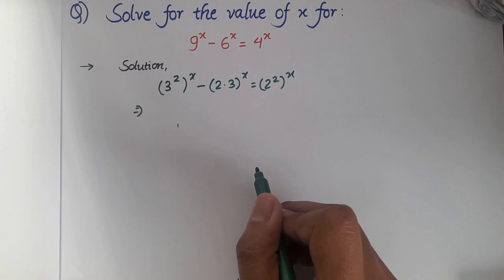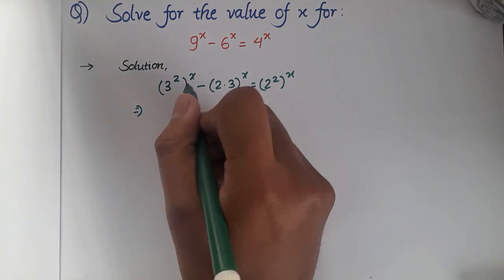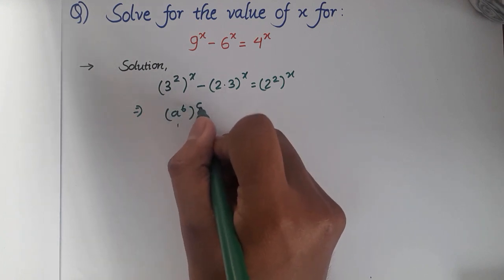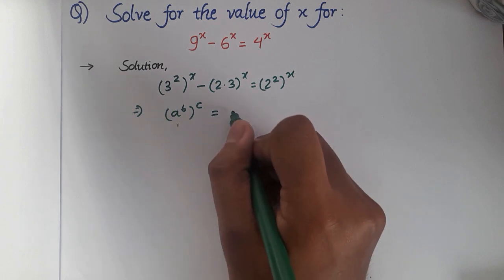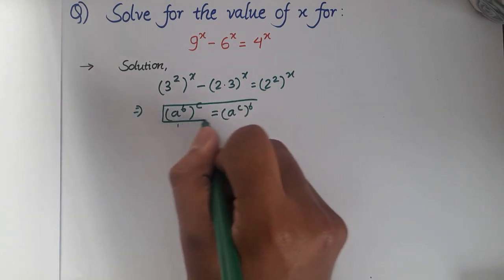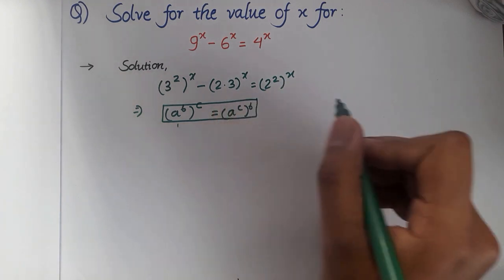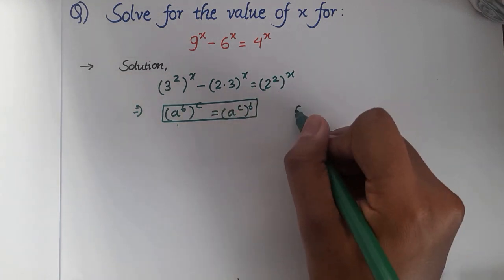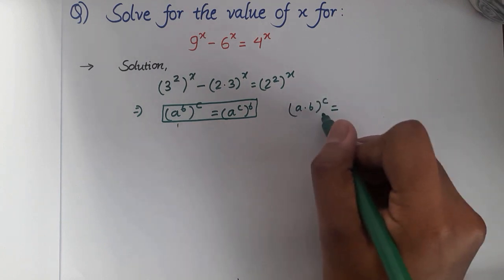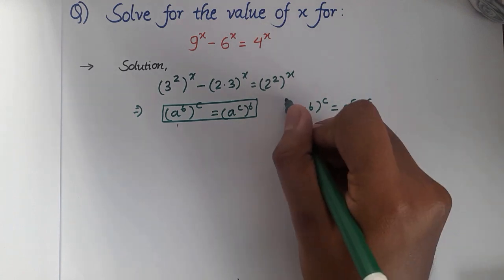Now before we proceed, there are two things to notice here. The first thing is about the first term: this is in the form of a power b, whole power c. This can also be written as a power c, whole power b. The second thing is about the second term: this is in the form of a multiplied by b whole power c, which can also be written as a power c multiplied by b power c.